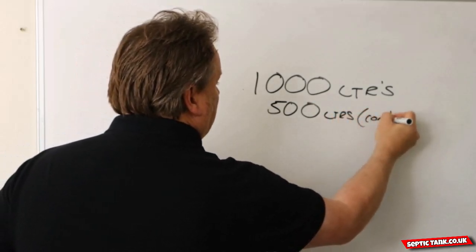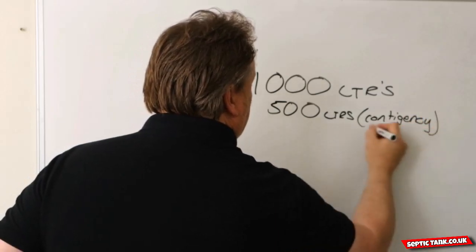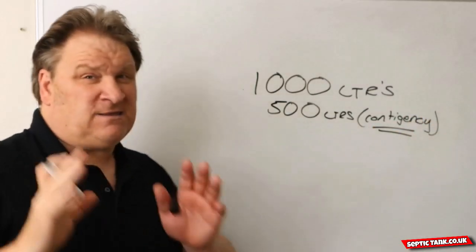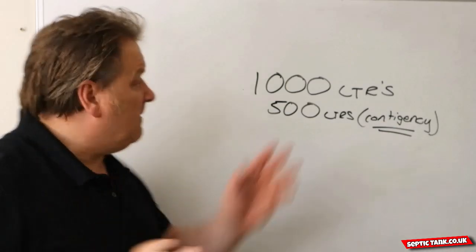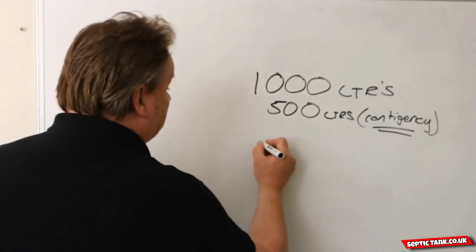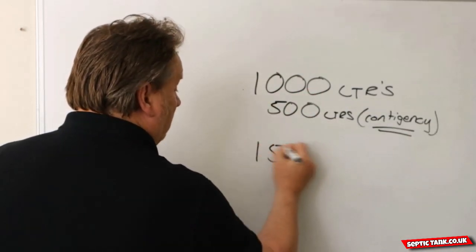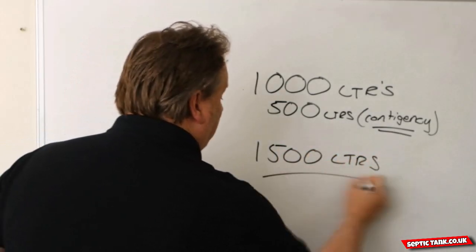So, contingency. Those are basically the two figures you have to deal with. Now we just add the two up. 1000 liters plus 500 liters gives us a grand total of 1500 liters.